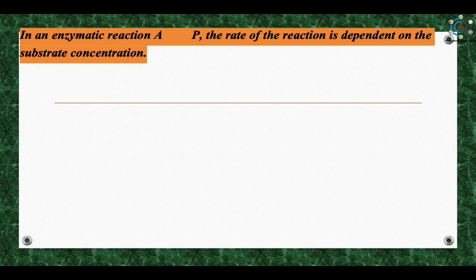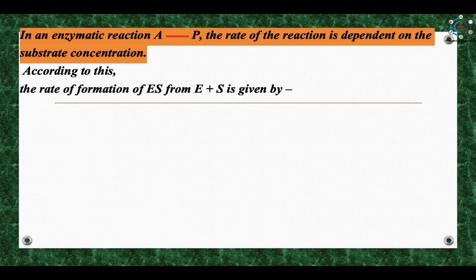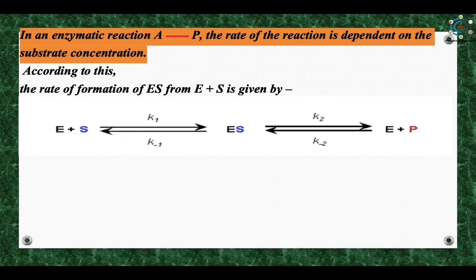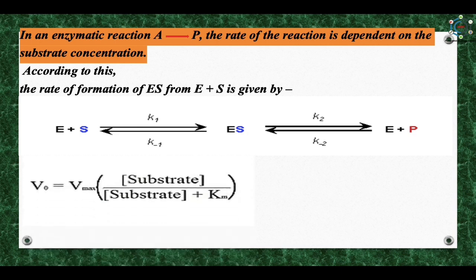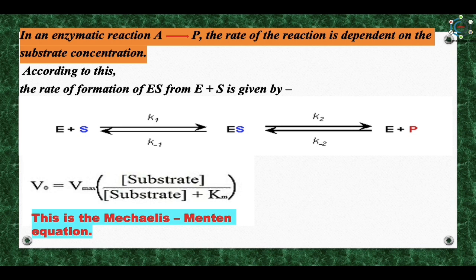In an enzymatic reaction where A forms P, the rate of reaction is dependent on substrate concentration. According to Michaelis and Menten, the enzyme first reacts with the substrate to form the enzyme-substrate complex, which then breaks down to form the free enzyme and the product. Both steps are reversible, with k1, k-1, k2, and k-2 as specific rate constants. After derivation, the equation is: V₀ = Vmax × [S] / ([S] + Km). This is known as the Michaelis-Menten equation.